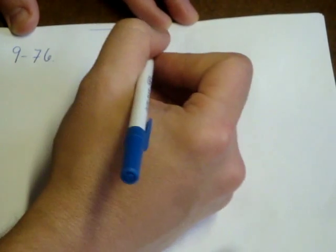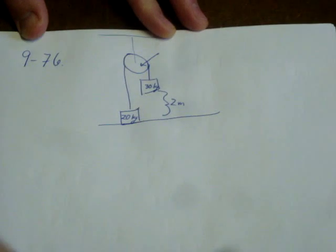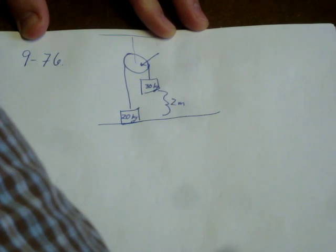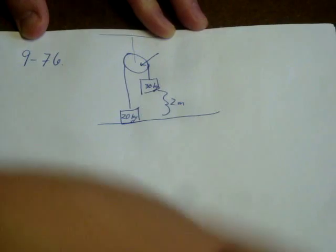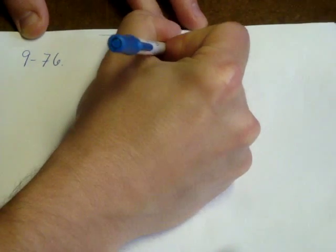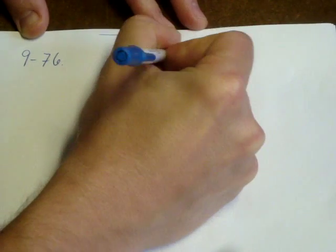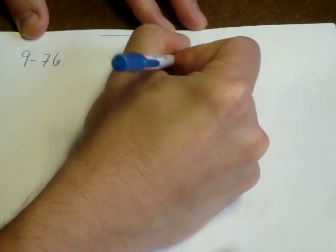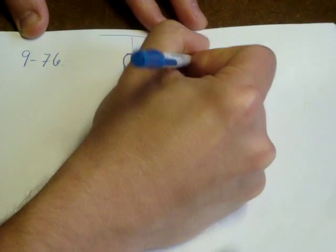It also tells us the information about the pulley. I need to scroll up so I can read the whole problem. The pulley has a radius of 10 centimeters and a mass of 5.0 kilograms.